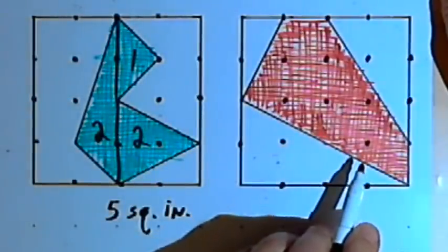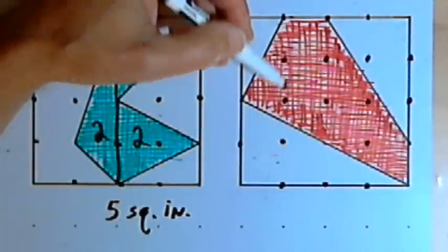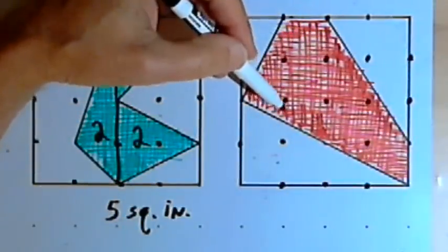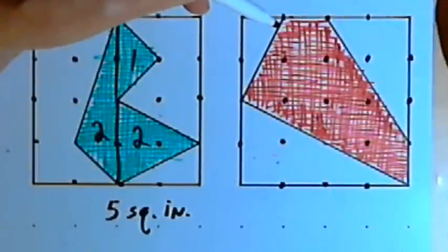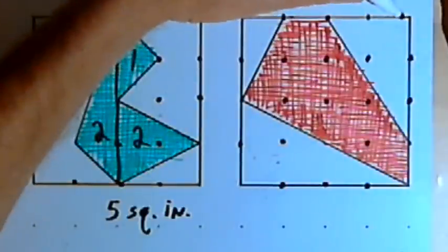Let's go to the red polygon. Sometimes it's hard to divide your irregular polygon into shapes that are easy to measure. When that happens, you might try something like this: draw a box to enclose the polygon.